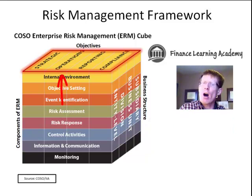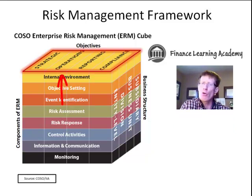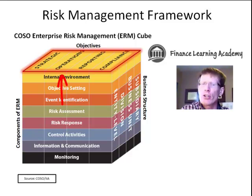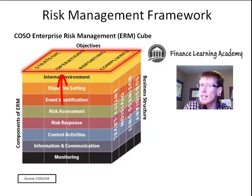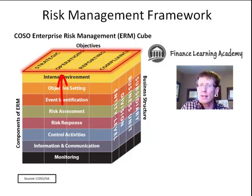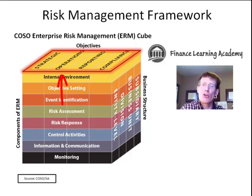Next we have operational objectives — those goals describing the effective and efficient use of resources. Consider such operational objectives as maintaining a defect rate less than 0.1% of production, or achieving a plant availability of 95%, or containing overtime hours to less than 2% of the total hours worked.